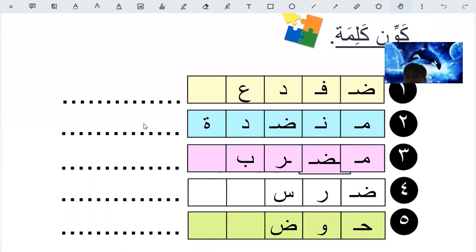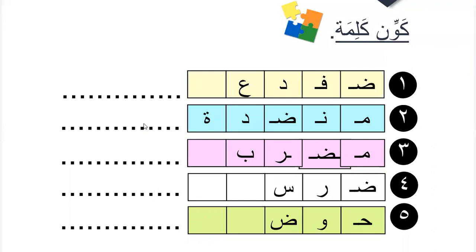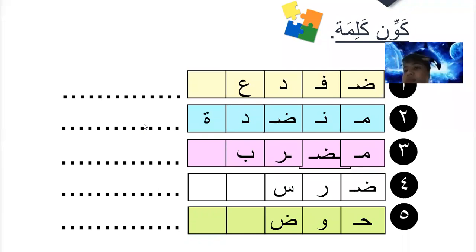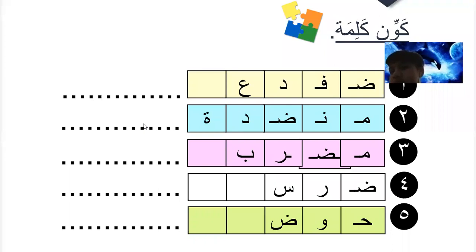Kawni kalima - make the word. Dhufdah, dhufdah - meaning frog. Yes, frog - correct! Min dada, min dada - min dada is probably a table - correct. Midrab - is a racket, racket - good.